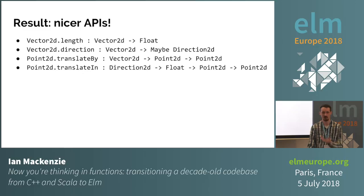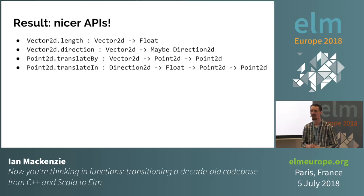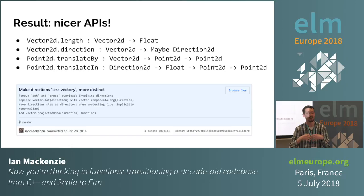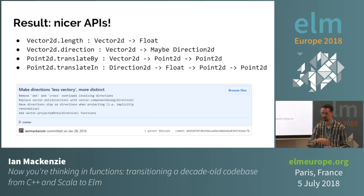At this point, when I started experimenting with Elm I was doing part Elm, part Scala. Around this time in the history of Elm geometry you start seeing commits show up in the Scala code that look like this: "Make directions less vector-y, more distinct." I was taking changes I had to make in my Elm code to make things work, and realising, wow, I really like this design better — it's just more clean, it's simple, it makes a lot of sense. So I went back and ported those changes back to Scala, even though I didn't have to. I just liked that design better.